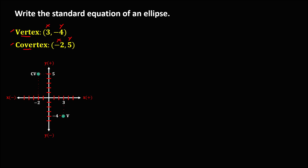Next, we need to find the center of the ellipse. The center is the point of intersection between the vertex and co-vertex. Observing the graph, there are two possible points of intersection. However, since in an ellipse the vertex must be greater than or longer than the co-vertex, one of the intersections is not the center for this ellipse.